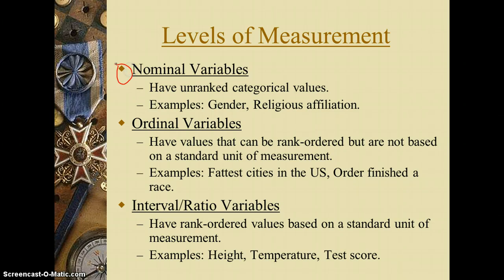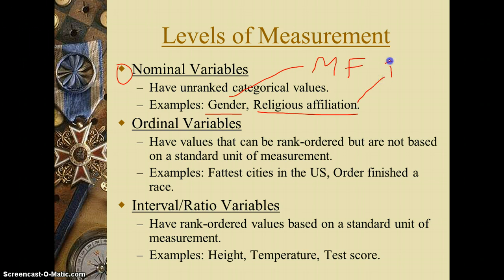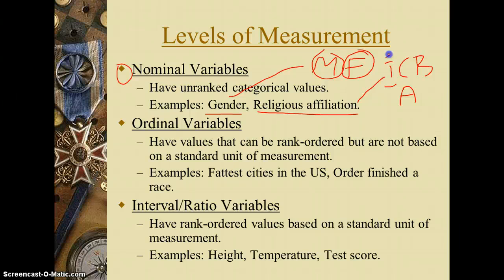Nominal variables have unranked categorical values like gender or religious affiliation. Gender would be male or female; religious affiliation could be Islam, Christian, Buddhist, Atheist, whatever we want to say. These have unranked categorical values — there's no reason why male or female is greater than or less than the other, same with religious categories. There is no way that we can rank them. That's not possible to do with these kinds of nominal or name values.